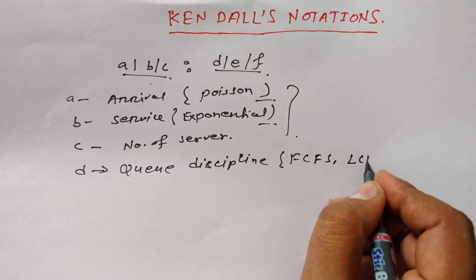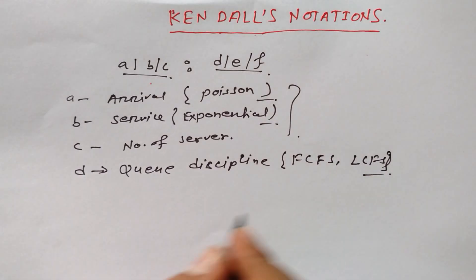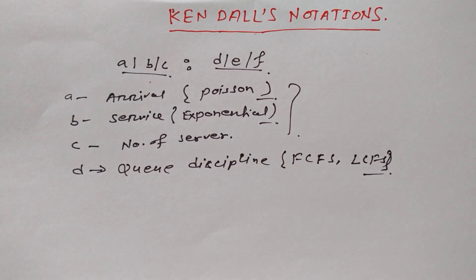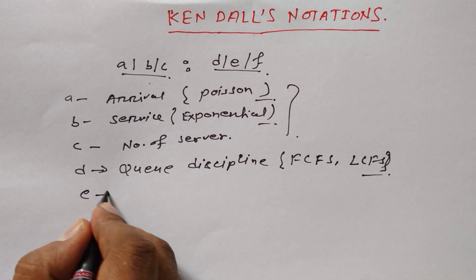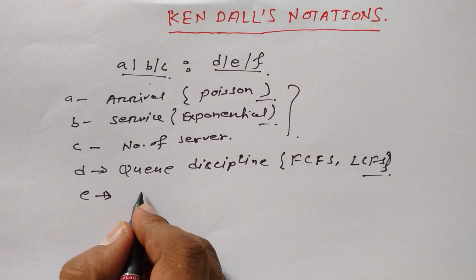And last come first serve. It depends on the system, what they are following. There are two types of queue disciplines we generally follow. So these are two.